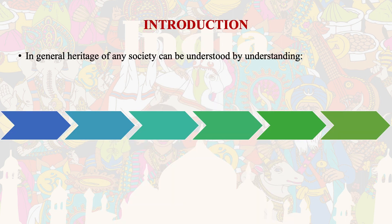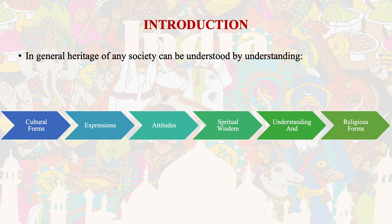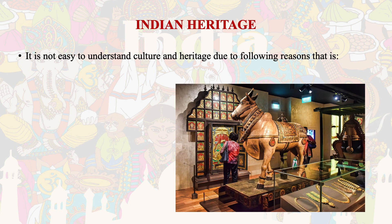In general, heritage of any society can be understood by understanding cultural forms, by saying expressions, by understanding attitudes, their spiritual wisdom, and by understanding religious forms. In the case of India, heritage and culture is complex due to time, span and influence. It is not easy to understand culture and heritage, and there are so many reasons for that.